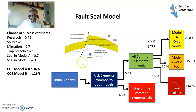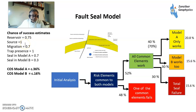Working it through, you have an initial analysis. You have your reservoir at 75% chance — it's a mature basin and you have a handle on what you think is going on. High chance of success for source because you're in a mature basin, relatively high chance of success for migration, and trap presence because you've got 3D.